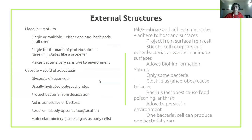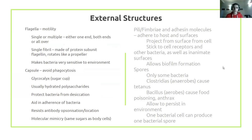In terms of structures on the outside of bacteria: a flagellum is a tail that enables movement. A capsule is a layer the bacteria forms around itself to avoid being phagocytosed — it makes it harder for immune cells to engulf the bacterium. Capsules also aid adherence to surfaces, resist antibodies, and can even display sugars that mimic the body's own proteins, tricking immune cells — this is called molecular mimicry.